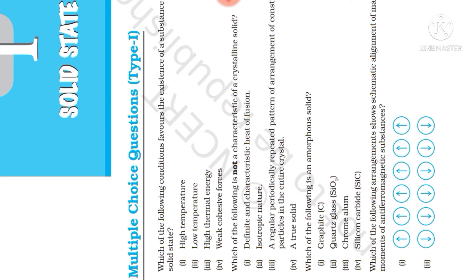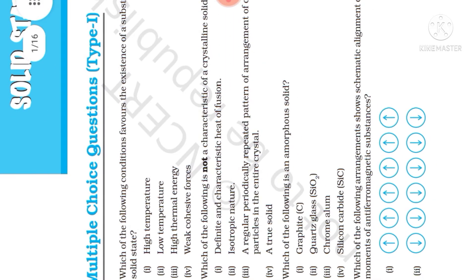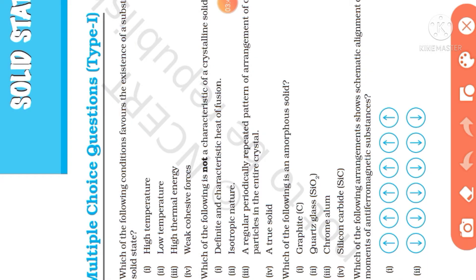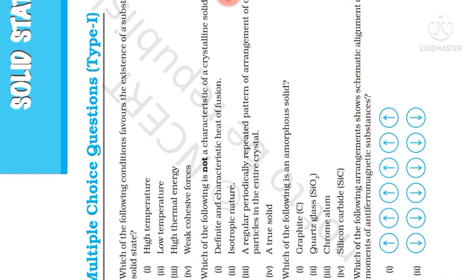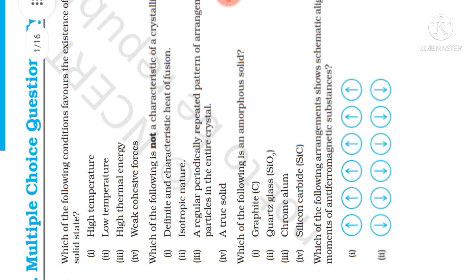Next question: which of the following is an amorphous solid? The options are graphite, quartz, glass, chromalum, and silicon carbide. The answer is glass — glass is an amorphous solid.